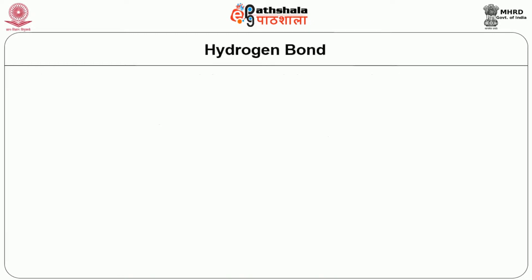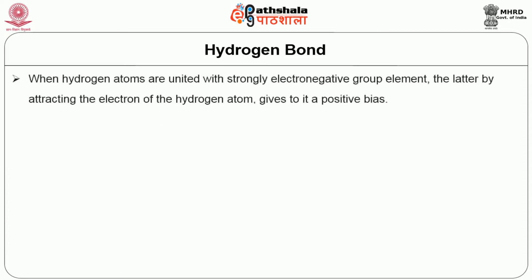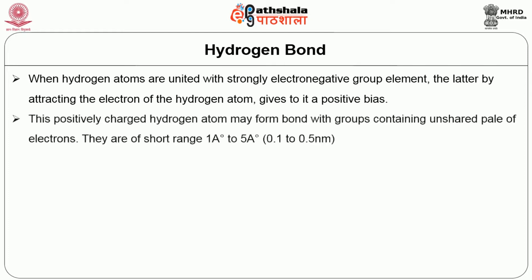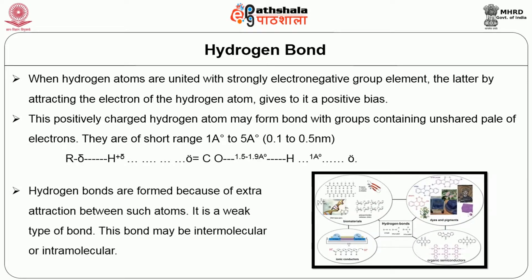Hydrogen bond formations with respect to the dye and fiber materials. When hydrogen atoms are united with strongly electronegative elements, the latter, by attracting the electrons of the hydrogen atoms, gives them a positive bias. This positively charged hydrogen atom may form a bond with groups containing unshared pairs of electrons. They are of short range — 1 to 5 Angstroms. Hydrogen bonds are formed because of extra attraction between such atoms. It is a weak type of bond that may be intramolecular or intermolecular.